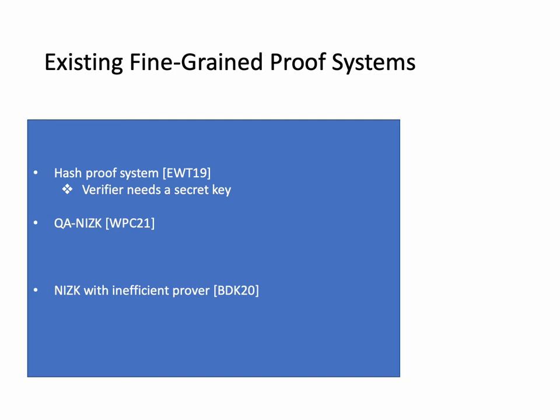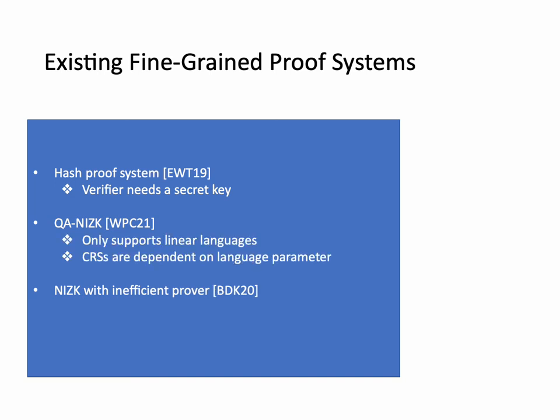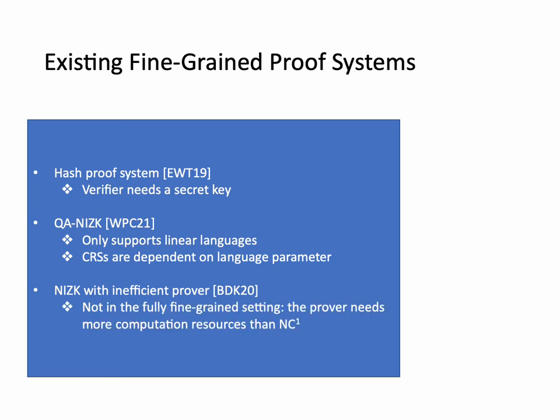But there are limitations on the existing proof systems. For the hash proof system, the verifier cannot verify publicly because it needs a secret key. For the QNIZK, it just supports linear languages, and the CRS is dependent on the language parameter. For the NIZK with inefficient prover, it's not in the fully fine-grained setting, because the prover needs more computational resources than NC1 — it has to run in polynomial time, so the prover may use more power than the adversary.